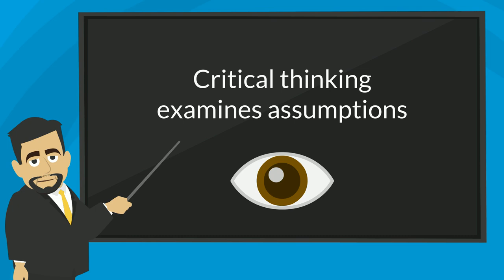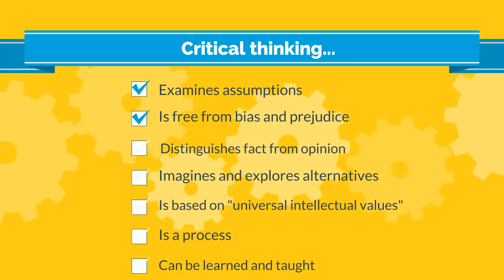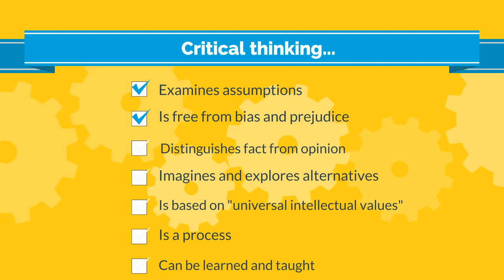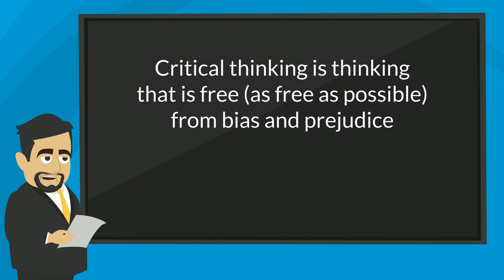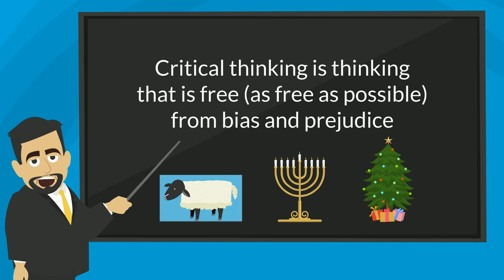We have many attitudes and assumptions that are deep culture elements and are very hard for us to see. Because of this, being aware of all of our assumptions is a difficult task that requires discipline and work. Critical thinking is thinking that is free, as free as possible, from bias and prejudice. Because different values are expressed in different ways, people from high context cultures are likely to consider people from low context cultures to be blunt. At the same time, people from low context cultures are likely to consider people from high context cultures to be secretive. Critical thinking requires us to understand things in their context.